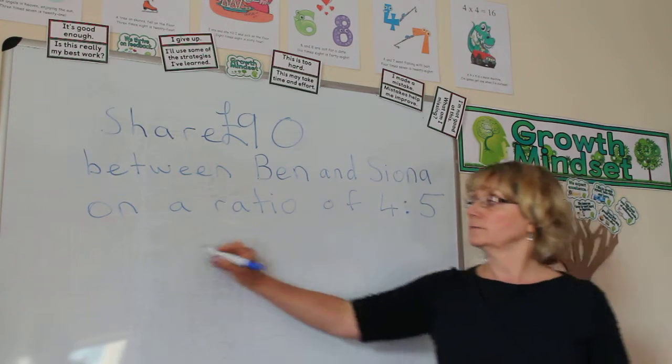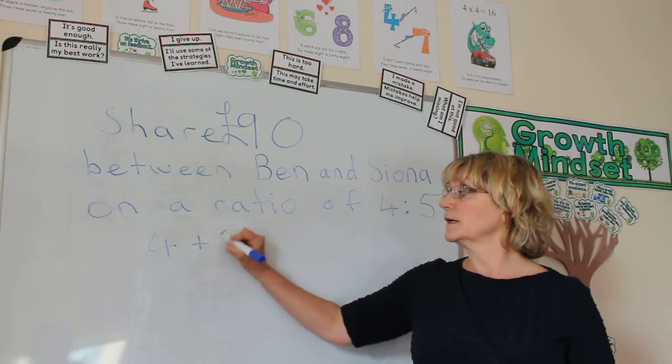Step 1, add the ratios together. 4 plus 5 equals 9.